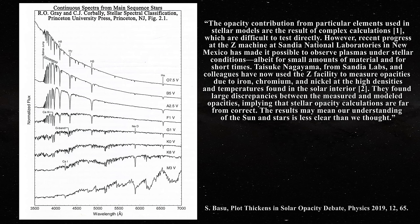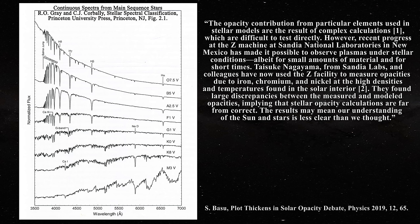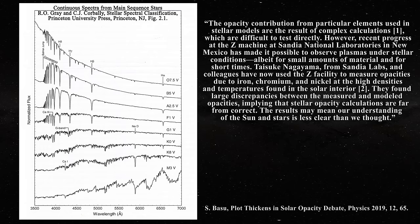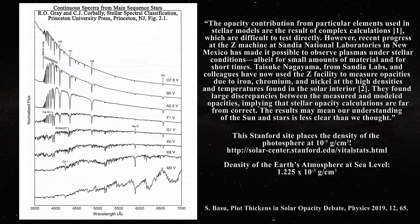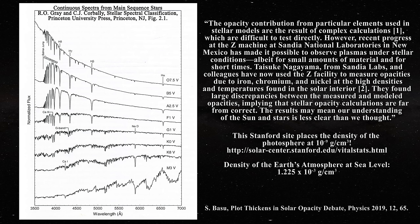Taisuki Nagayama from Sandia Labs and colleagues have now used the Z facility to measure opacities due to iron, chromium, and nickel at the high densities and temperatures found in the solar interior. They found large discrepancies between the measured and modeled opacities, implying that stellar opacity calculations are far from correct. The results may mean our understanding of the sun and the stars is less clear than we thought. In reality, it is the opacity near the photosphere that matters in order to account for the solar spectrum, and that region of the sun in the standard model has a density of a vacuum at 10 to the minus 7 grams per centimeter cubed. The opacity of something that sparse will never be able to be tested in the Sandia Labs.